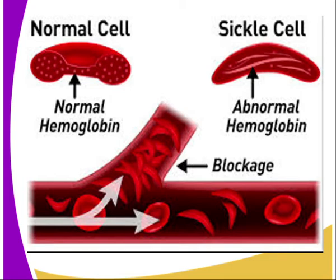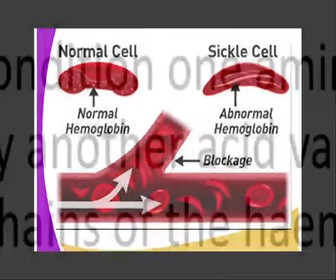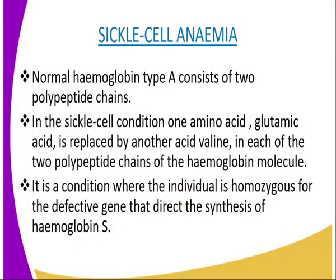Inheritance of the sickle cell condition is a case of incomplete dominance. If a man who is a carrier of the sickle cell trait marries a normal woman, the probability that any of the offspring will carry the sickle cell trait is one half. However, in a marriage between two sickle cell carriers, the probability of obtaining a sickle cell child is one quarter, while the probability of getting a child carrying the trait is one half.